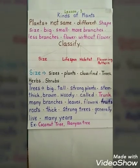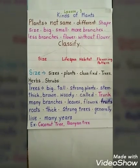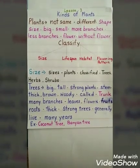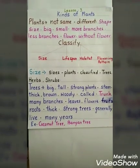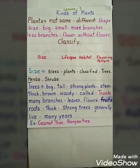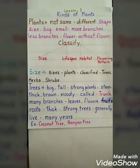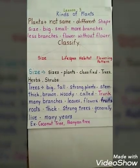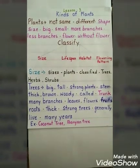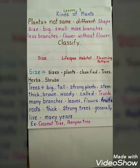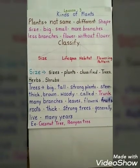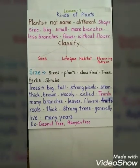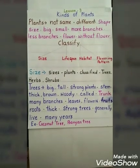Before starting, let us have a quick check of previous lessons. Lesson number 1: we learned the characteristics of living and non-living things. Lesson number 2: we learned that animals and human beings, though they have similar characteristics, also differ from each other in many ways.